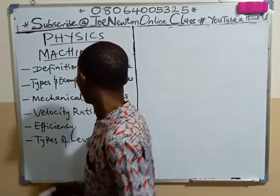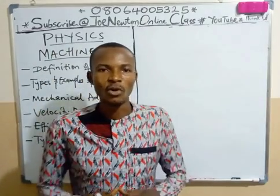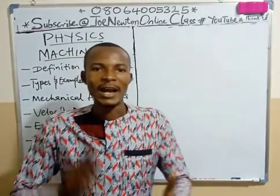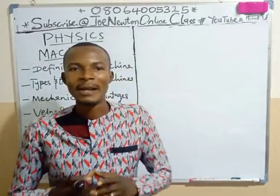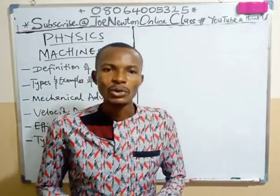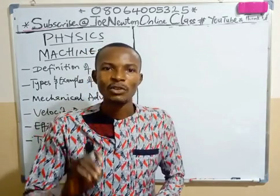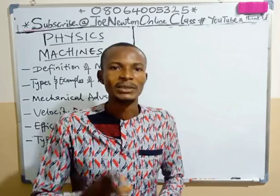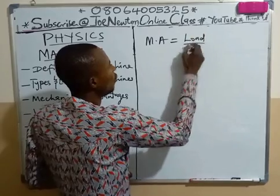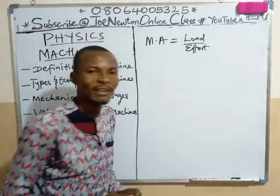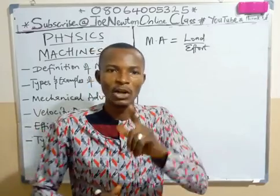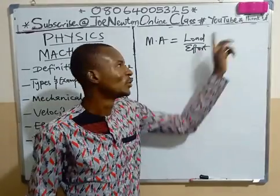The next concept is mechanical advantage. There are three basic terms used for describing machines: mechanical advantage, the velocity ratio of a machine, and the efficiency of a machine. By mechanical advantage of a machine, we mean the ratio of the load to the applied effort. Therefore, mathematically, mechanical advantage MA is equal to load over effort applied. It has no unit because load is in Newtons, effort is in Newtons, and Newton cancels Newton.